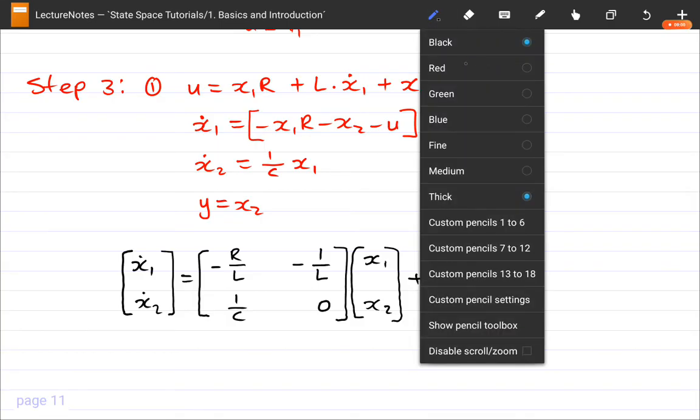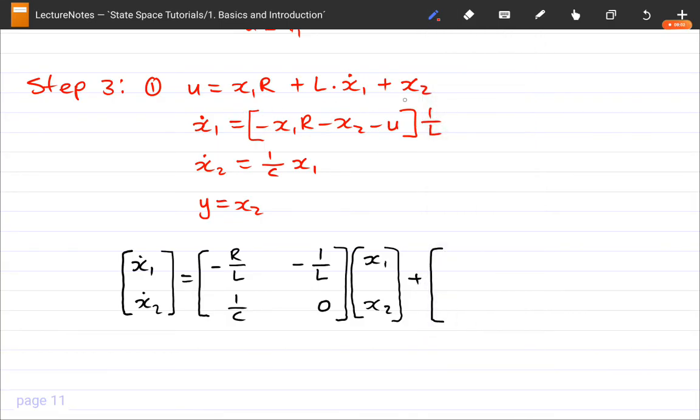Plus, oh, I made a mistake here. I had a feeling something was wrong. That one, this should have stayed positive. Sorry about that. And that's going to be, this goes for X1 dot, it's going to be 1 over L, and this is going to be 0.